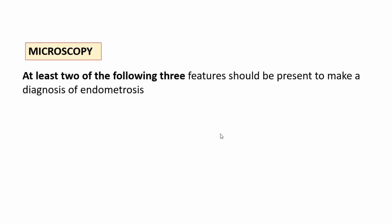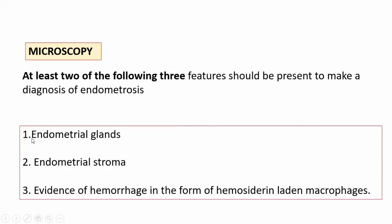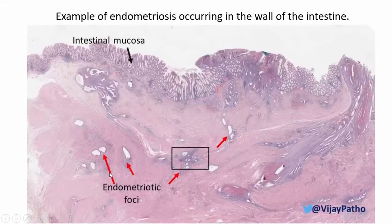Microscopically, the criteria to diagnose endometriosis require at least two of the following three features: one, endometrial glands; two, endometrial stroma; three, evidence of hemorrhage in the form of hemosiderin-laden macrophages. The presence of any two of these three features is sufficient to make a diagnosis of endometriosis.